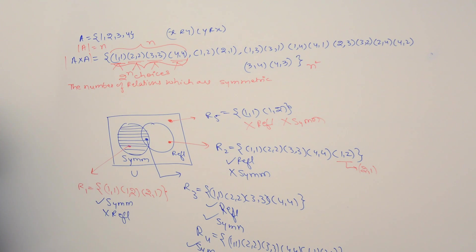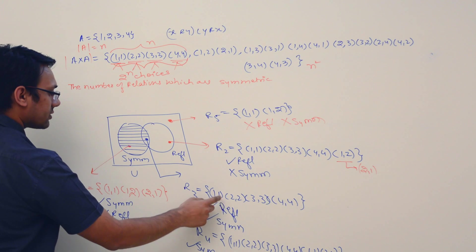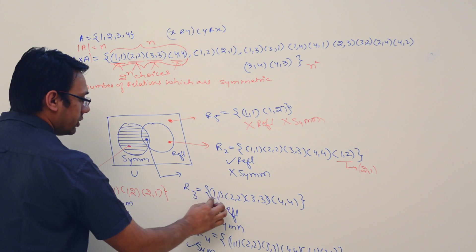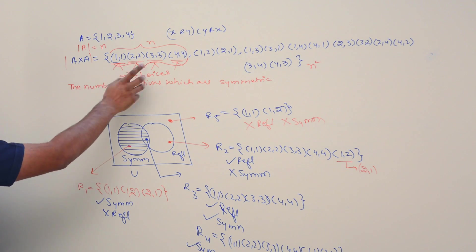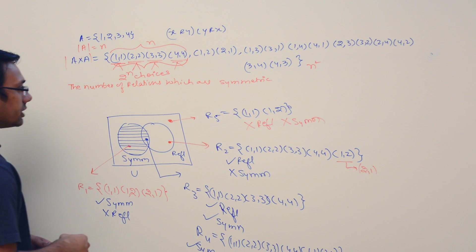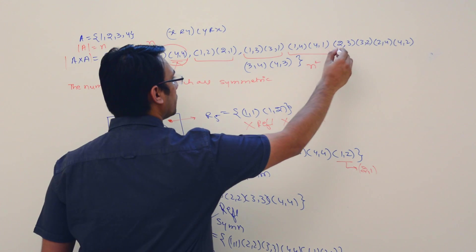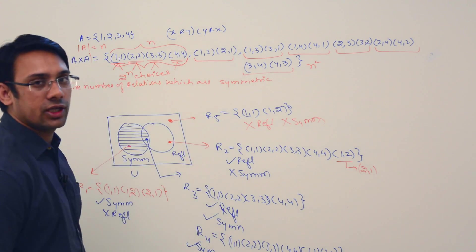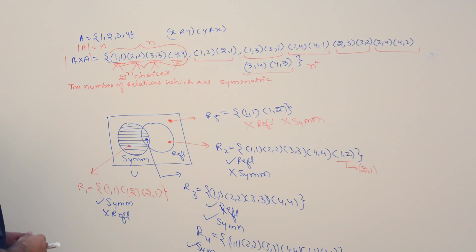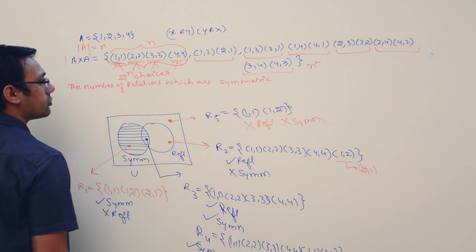For the diagonal elements, if x equals y, then the pair (x,y) and (y,x) are the same, so the relation is automatically symmetric. For the off-diagonal elements, we have a choice in pairs. If a relation has to be symmetric, then if (1,2) is there, (2,1) must also be there.